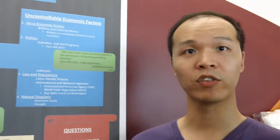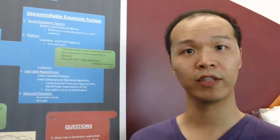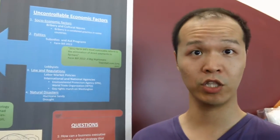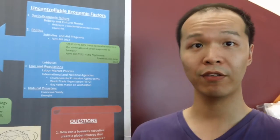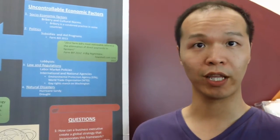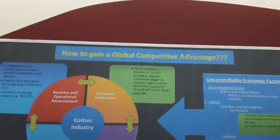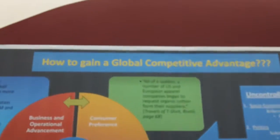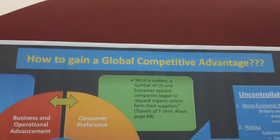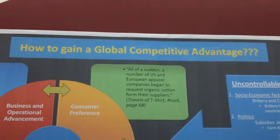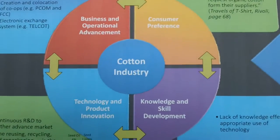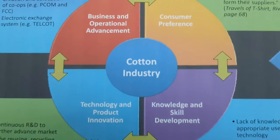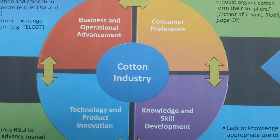The next chapter was chapter four. It was mainly talking about the subsidies in the U.S. The main story we got out of this chapter was how to gain a global competitive advantage. It was mainly talking about all the other factors that helped the U.S. maintain dominance in the cotton industry.